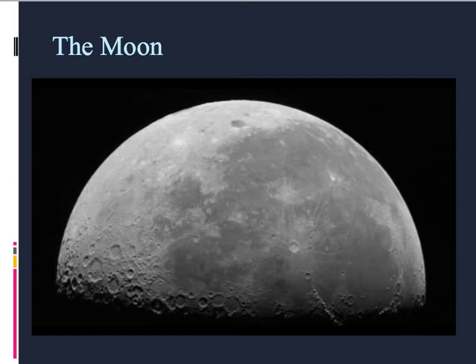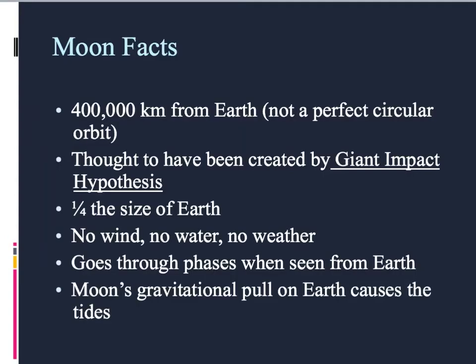Now we're going to get into some moon facts, and then we'll get into features. So the moon is roughly 400,000 kilometers from Earth, and just like how Earth doesn't orbit in a complete circle, neither does the moon.